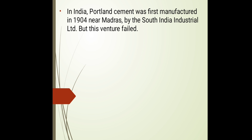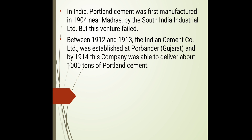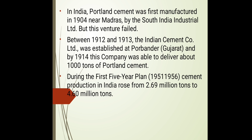In India, Portland cement was first manufactured in the year 1904 near Madras in South India, but it failed due to some particular reasons. Between 1912 and 1913, the India Cement Corporation Limited was established at Porbandar, Gujarat. By 1914 this company delivered about a thousand tons of Portland cement. During the first five-year plan from 1951 to 1956, cement production in India rose from 2.69 million tons to 4.60 million tons. We will continue with the introduction in the next class.